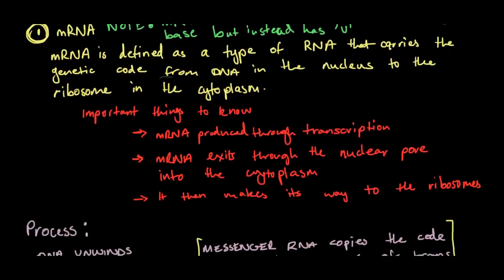In mRNA, it is defined as a type of RNA that carries the genetic code from DNA in the nucleus to the ribosome in the cytoplasm. So let's think about this. In the nucleus, we have DNA. That DNA, it unwinds, and when it unwinds, this mRNA copies the half of the DNA that it needs, and then ends up going to the ribosome in the cytoplasm.